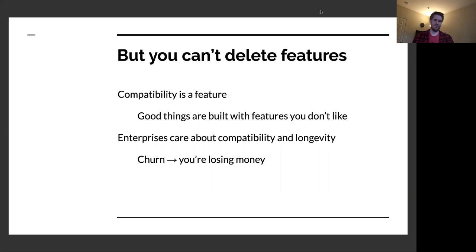We can't just delete features. We may agree some stuff is a little over the top, but a lot of good things are built with features you may not necessarily like, and compatibility is a very important feature for a programming language. Enterprises care about compatibility and longevity. Anytime a development team says we have to spend time migrating because of reasons, that just means losing money — instead of adding value, you're doing technology churn. The more of that you have, the less likely you'll find adoption in an enterprise.